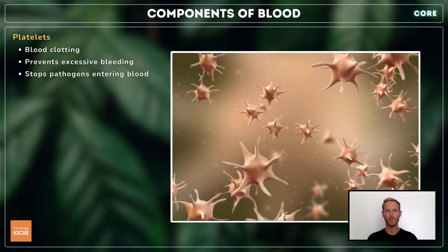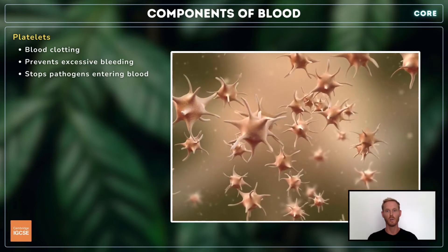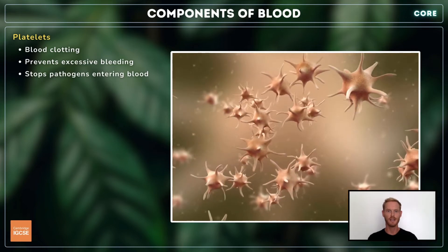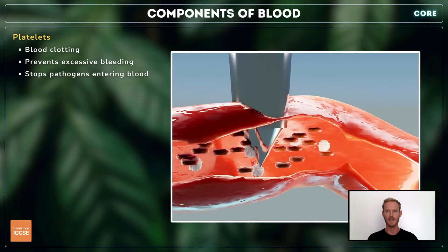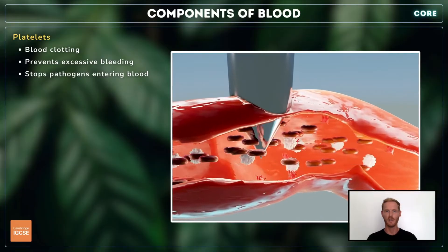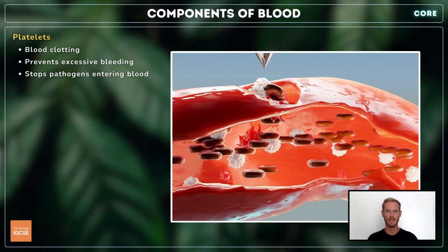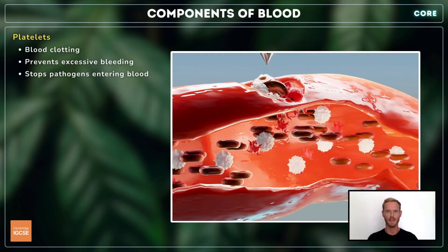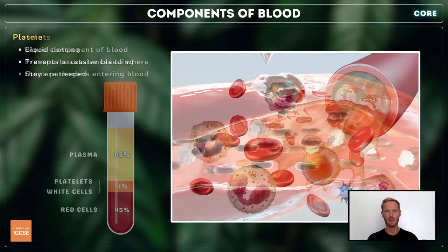Platelets are small colourless cell fragments that cause the blood to clot whenever a blood vessel is damaged. If it weren't for the platelets, there would be nothing to stop a cut or graze from bleeding, the wound would stay open, making it easier for pathogens to enter the bloodstream.